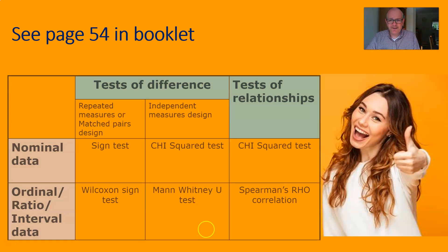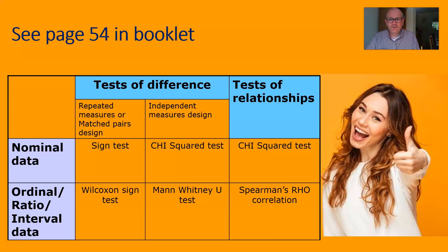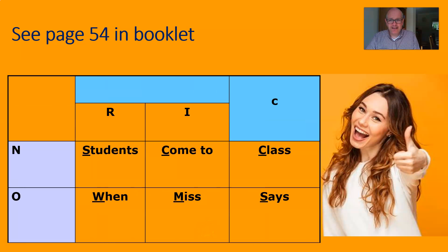Let's go back over that again. Students is the sign test. Come is chi-squared. Class is chi-squared. When is Wilcoxon. Miss is Mann-Whitney U. And Sayes is Spearman's Rho. Then 'no rig' stands for nominal and at least ordinal data. R-I-G stands for repeated measures design or matched pairs — you might want to call it related data. I is for independent groups design. And C is for correlation if we're looking for a relationship.